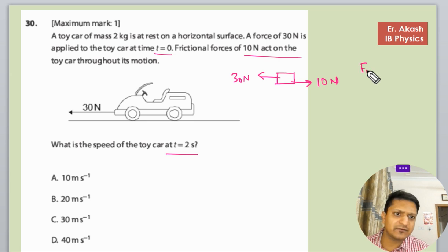So F net will be 30 minus 10. So basically, 20 newton is the force that is getting applied on this object or on the car.